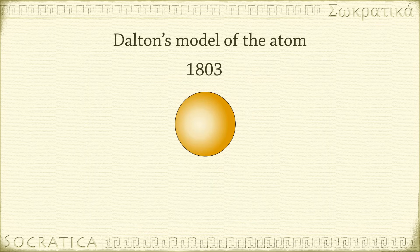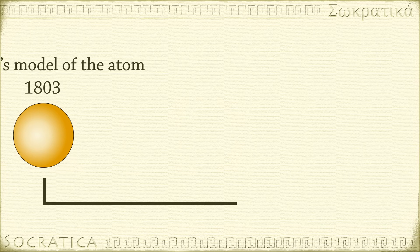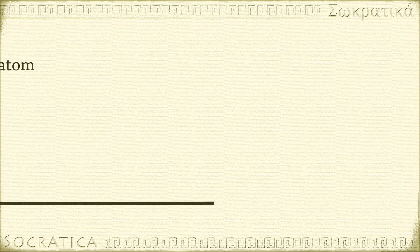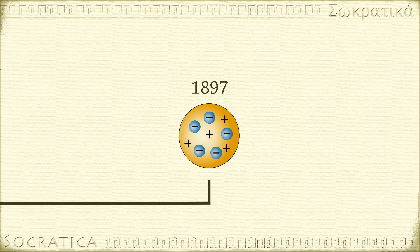Since Dalton's first conception, the model of the atom has evolved over time. Each time new experimental observations were gathered that couldn't be explained by the atomic model of the day, the model had to be revised and refined. For instance, the discovery of subatomic particles meant Dalton's model, which said atoms were indivisible, needed some work.